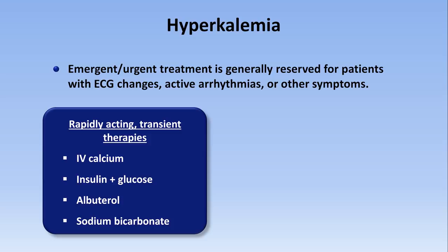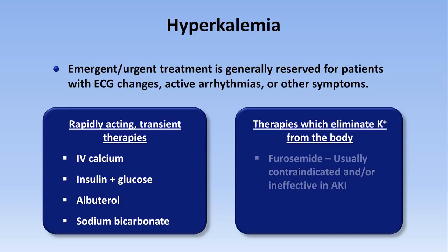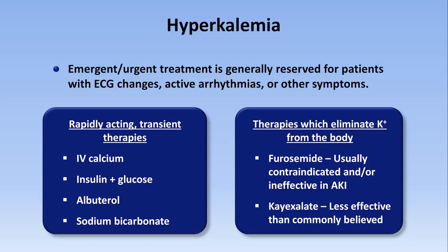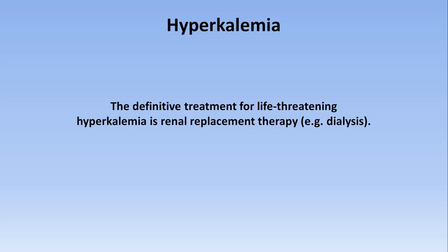Therapies that eliminate potassium from the body altogether include loop diuretics such as furosemide, which cause the kidneys to excrete potassium — however, this is usually contraindicated or ineffective in AKI, particularly in volume-depleted patients. Another option is kayexalate, an oral medication that binds potassium in the GI tract for elimination in the feces, although its evidence of effectiveness is surprisingly underwhelming. The definitive treatment for life-threatening hyperkalemia is renal replacement therapy such as dialysis; for patients with hyperkalemia-related arrhythmias or severe ECG changes, all other therapies should be viewed as temporary bridges while getting dialysis set up.